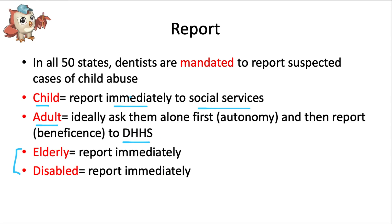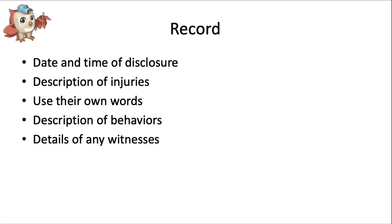As soon as you can after reporting, write down as much relevant information as possible before you forget, as it may be referenced later as evidence if legal action is taken. Include the date and time of disclosure, a detailed description of all injuries, the patient's exact words — don't edit them — any concerns, description of behaviors as objectively as possible, details of any witnesses, and whether the disclosure was spontaneous or in response to a question you asked.